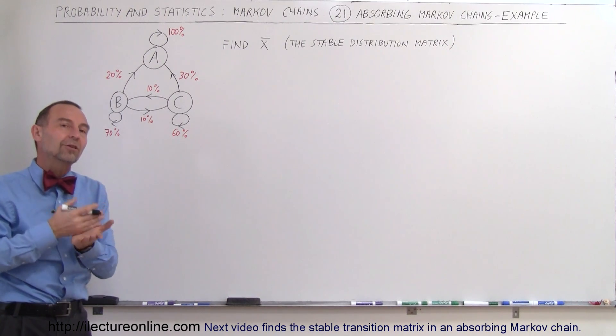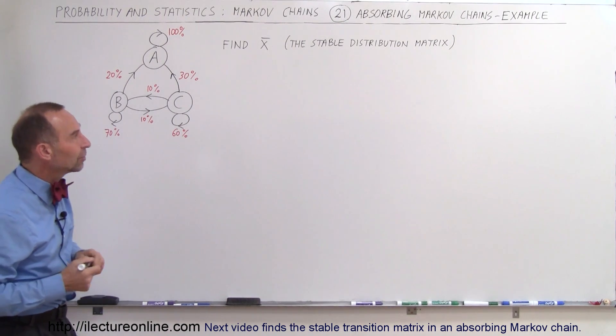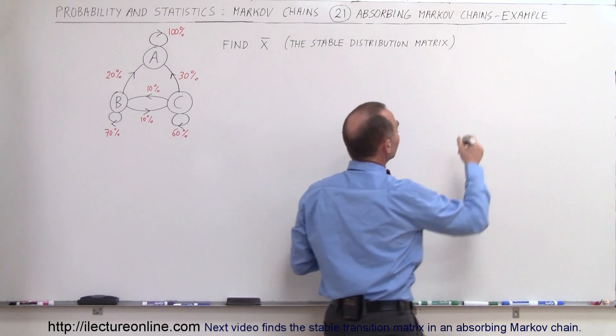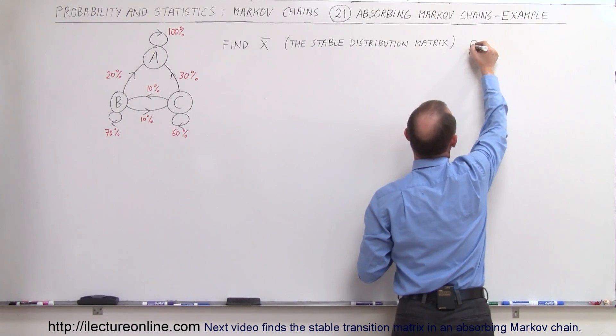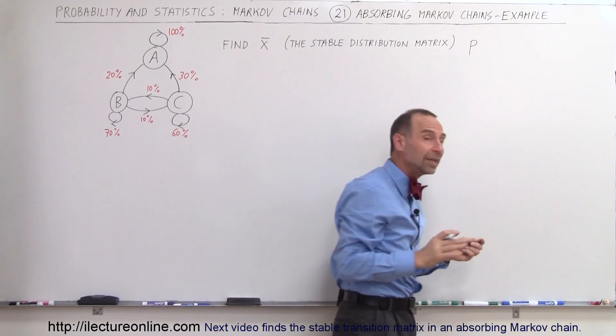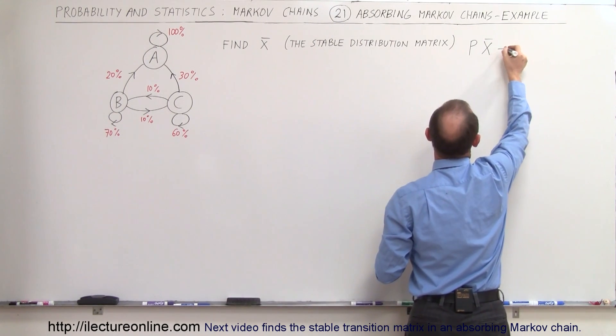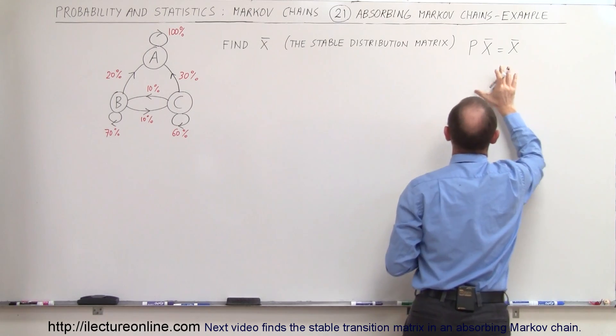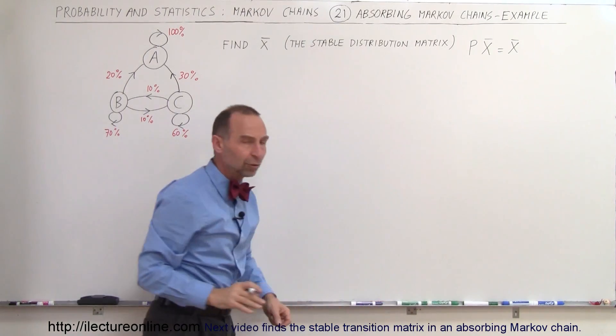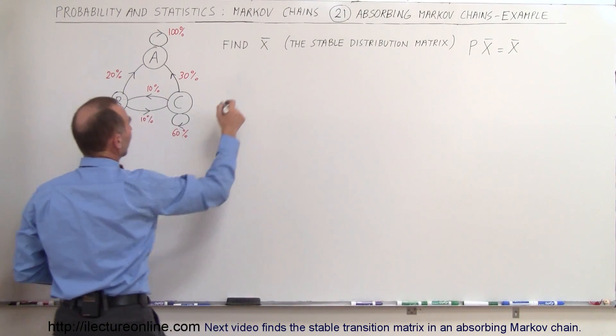We're going to go back to our traditional method of calculating the stable distribution matrix by saying that if you multiply the transition matrix, the matrix that contains all the transition probabilities, times the eventual stable matrix, we should get back the stable matrix. So we're going to use this technique.